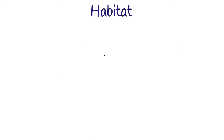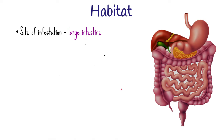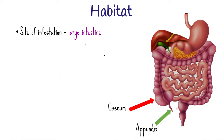Where do these pinworms infest, or where exactly are they found in the human body? Just like other nematodes, the main site of infestation is the alimentary canal or the digestive tract, especially the large intestine. The adult worms are located in the cecum, the appendix — a finger-like blind-ended tube connected to the cecum at the junction of the small and large intestine — and the adjacent portion of the ascending colon. Pinworms normally remain attached in any of these parts by their mouth end.